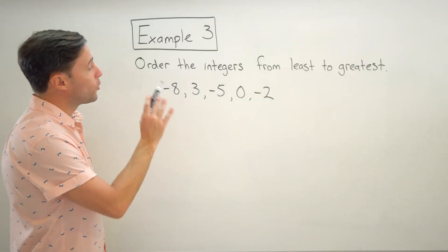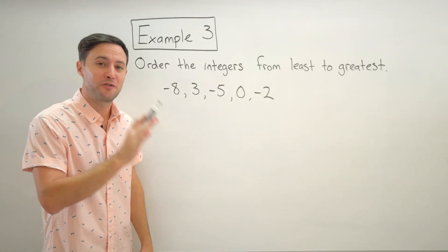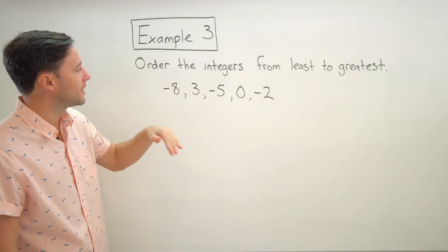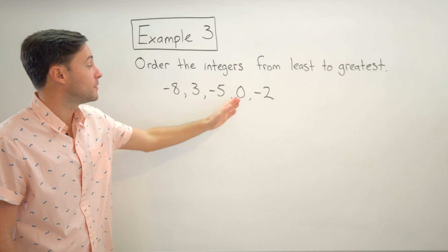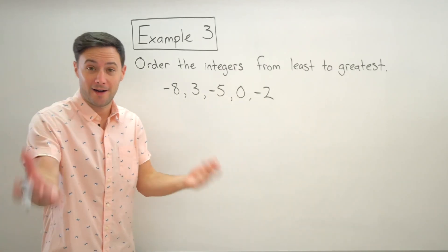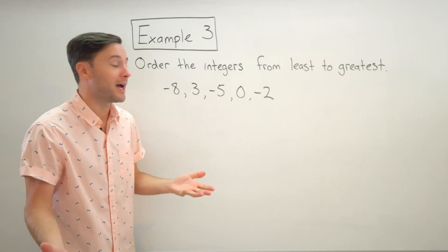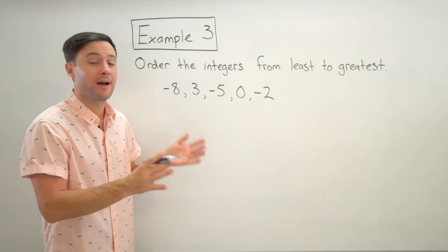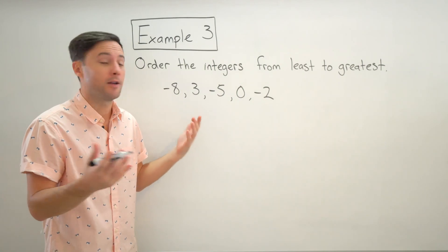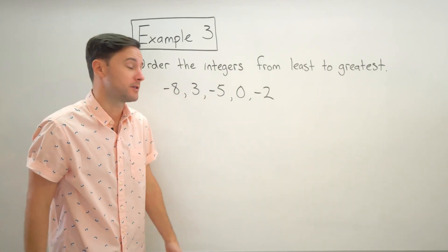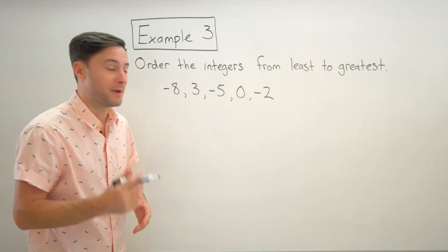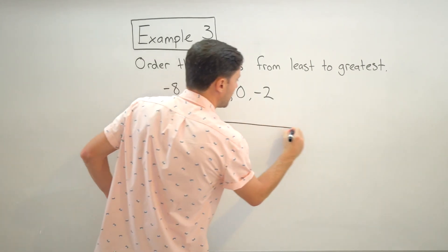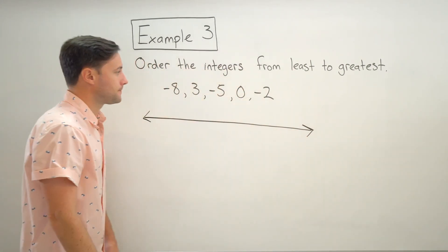All right. Here's our last example. Order the integers from least to greatest. So here are our integers. We've got some negatives, one positive I guess, and we've got zero. So again, I'm going to use a number line to help me kind of figure this out. As you get more kind of comfortable with this, you might not even need a number line to help you order these from least to greatest. But for right now, we're going to make one. So again, here we go. We've got my arrows like that.